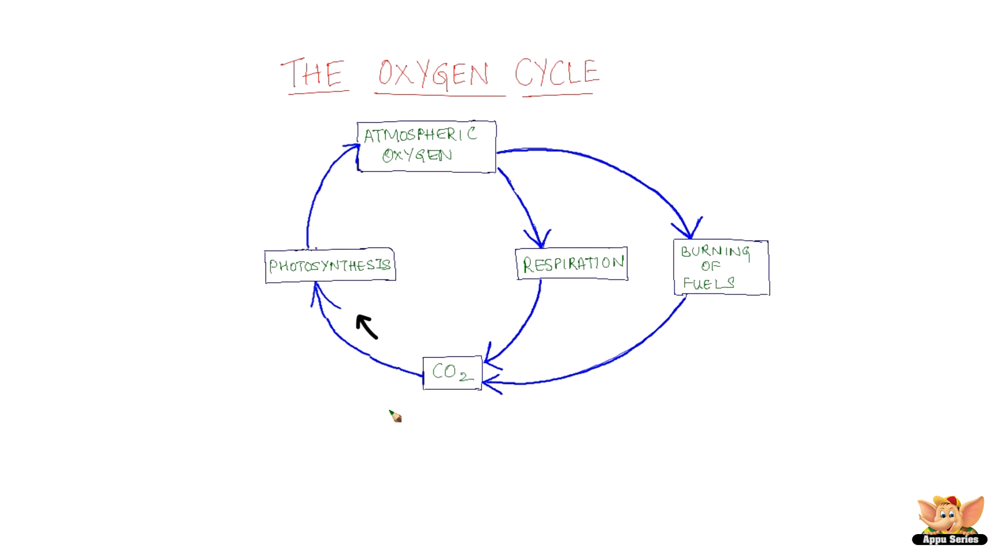Plants use carbon dioxide in the process of photosynthesis and convert it to atmospheric oxygen. This is the oxygen cycle.